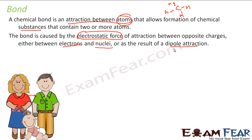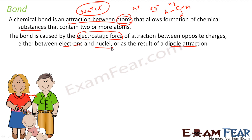Bonds can be either between electrons and nuclei, or they can be a result of dipole attraction. For example, you can have a bond between Na+ and Cl-, where positive and negative charge form a bond. This can be an electrostatic bond or a dipole-dipole attraction, for example a hydrogen bond. So there are different kinds of bonds — weak bonds and strong bonds.